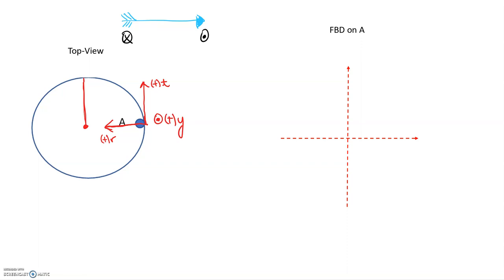Now that we've defined our coordinate system, we can draw our free body diagram for point A. What forces are acting on the girl at point A? We've got a weight force in the negative Y direction, and a normal force acting from the merry-go-round on the girl in the positive Y direction. So we label the normal force F sub N in the positive Y direction, and the weight force going away from us in the negative Y direction.